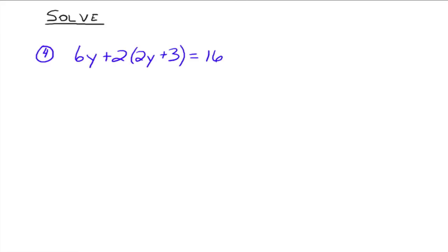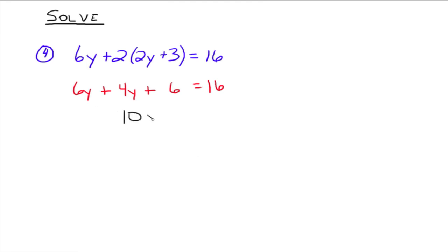Now let's do one that's a little longer — we have a bit of algebra to do before solving. We have 6y plus 2 times (2y plus 3) equals 16. We need to distribute that 2 out first, rewriting it as 6y plus 4y plus 6 equals 16. Then combining like terms: 6y plus 4y gives 10y, so 10y plus 6 equals 16.